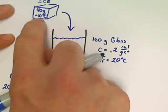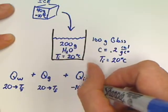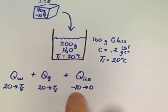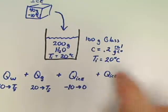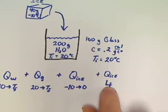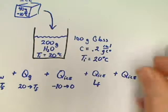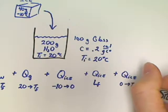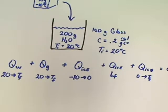We're actually going to have three Q's for the ice. The problem started the ice at negative 10 degrees, not zero. So first, we need a Q for the ice to go from negative 10 to zero — we've got to heat the ice up before we can melt it. Then we need an LF to actually melt the ice. Then one more Q for the ice to go from zero up to some temperature final. All this equals zero.